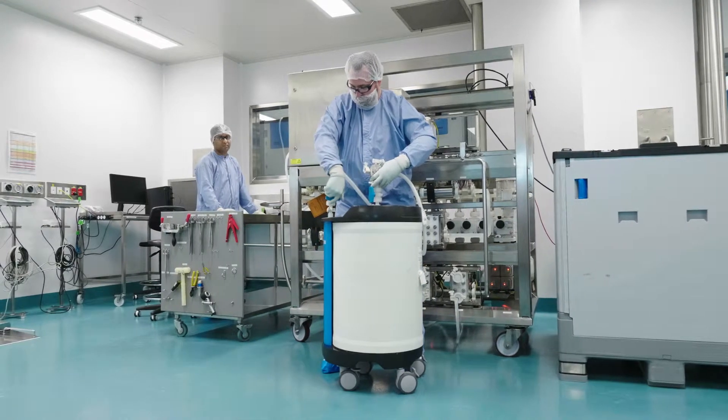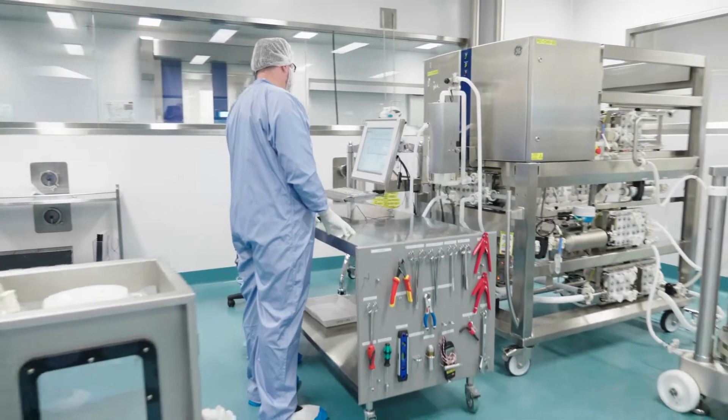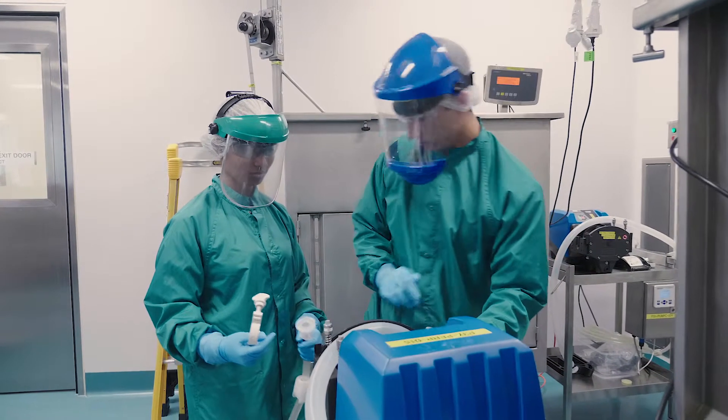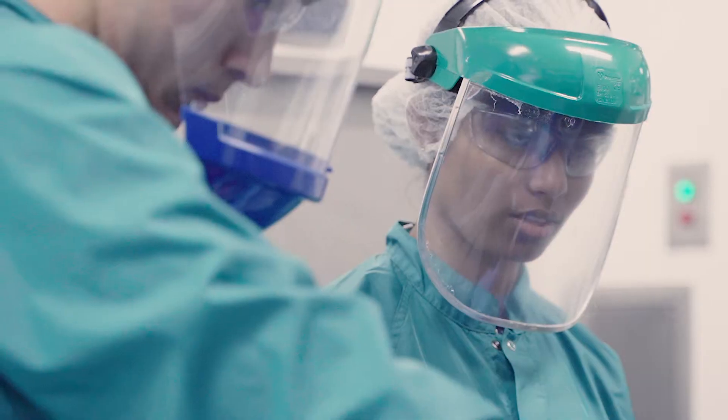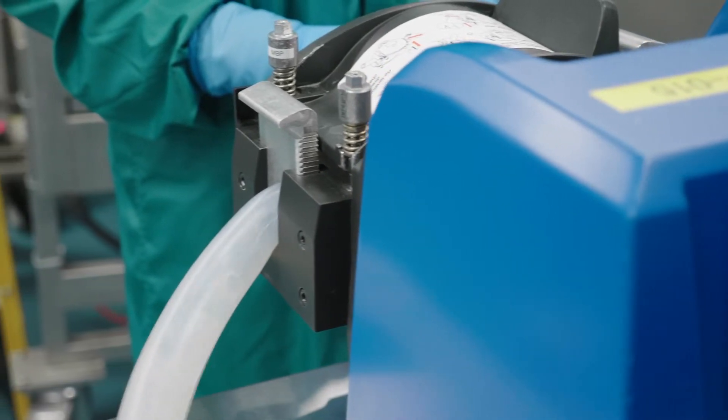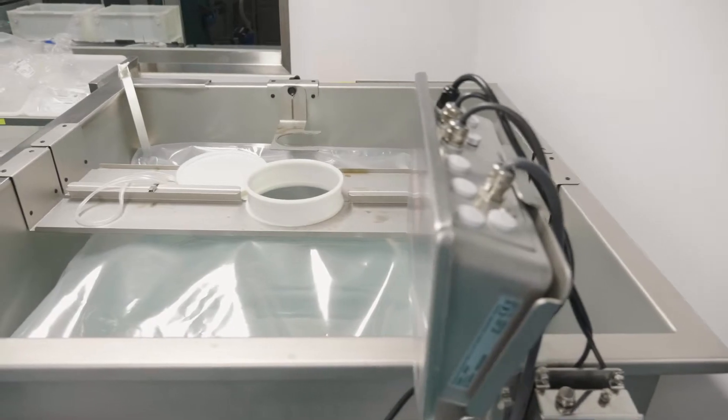In downstream, we receive clarified harvest from our upstream team and generally our first step will be a capture chromatography on one of our chromatography skids. We have two different types of skid at the Brisbane facility: the ÄKTA Bio Process and the ÄKTA Ready. After our primary capture step, we typically come further down the suite and perform a low pH virus inactivation step, and then there'll be another one or two polishing steps on other chromatography media.